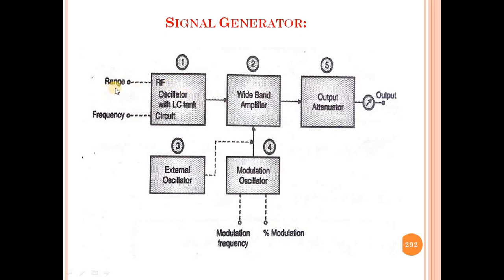The blocks and the range frequency are as follows. The first block is the RF Oscillator with LC Tank Circuit. The second block is the Wide Band Amplifier. The third block is the External Oscillator. The fourth block is the Modulation Oscillator — this gives the modulation frequency and percentage modulation. The fifth block is the Output Attenuator, and finally you select the output.